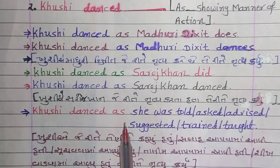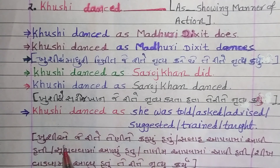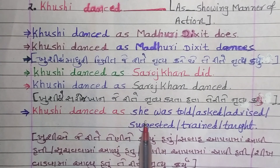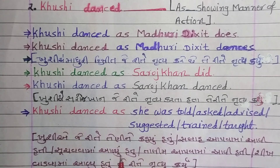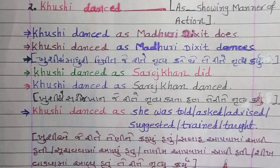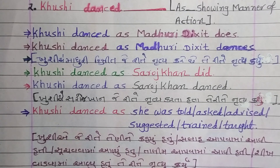Khusi danced — કેવી રીતે? As she was told, as she was asked — ખુસીએ જે રીતે તેણીને કહ્યું હતું તે રીતે નૃત્ય કર્યું. As she was advised — જે રીતે તેણીને સલાહ આપવામાં આવી હતી. As she was suggested — જે રીતે સૂચવવામાં આવ્યું. As she was trained — જે રીતે તાલીમ આપવામાં આવી. As she was taught — જે રીતે શીખવાડવામાં આવ્યું.